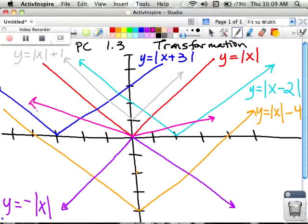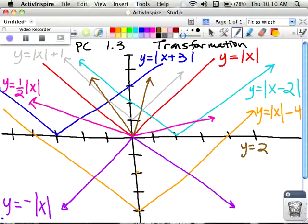This one is y equals one half absolute value of x. The brown one, which I'm running out of room for, so I'm going to write the equation down on the lower right-hand side here, is y equals 2 times the absolute value of x.